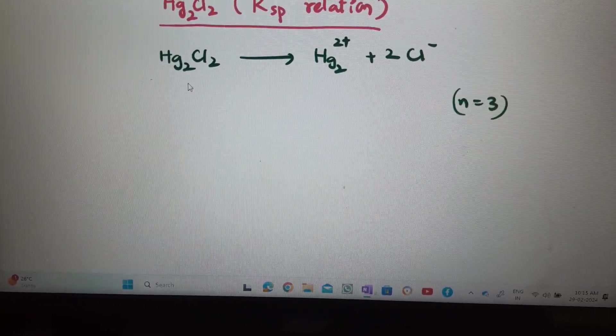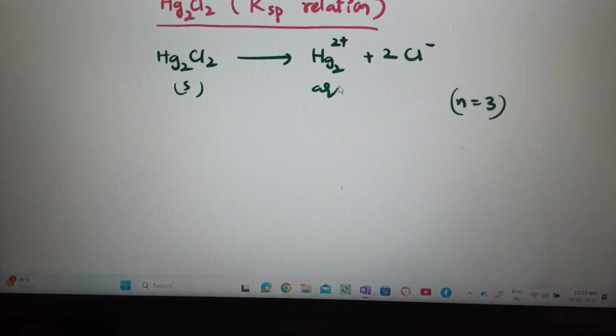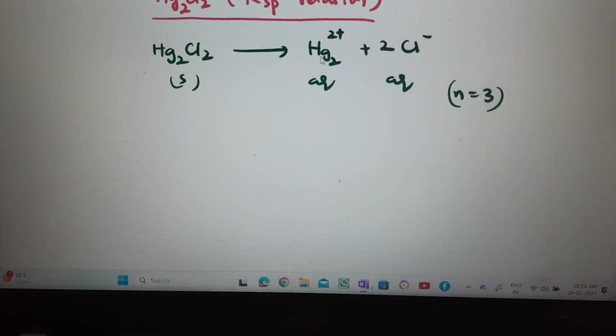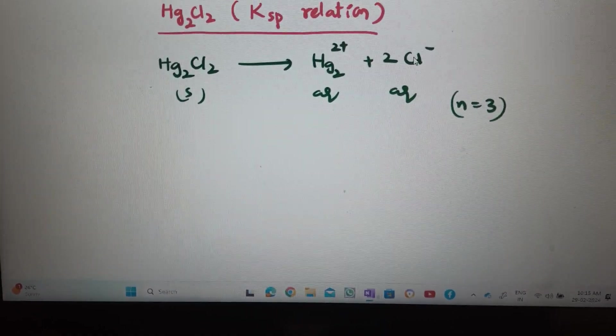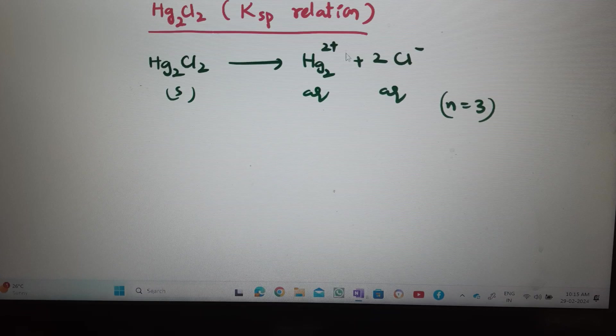Then, if we are writing, this is solid, aqueous, aqueous. People will feel that 2Hg⁺ plus 2Cl⁻, 4 ions will come. That is wrong. This is the data.